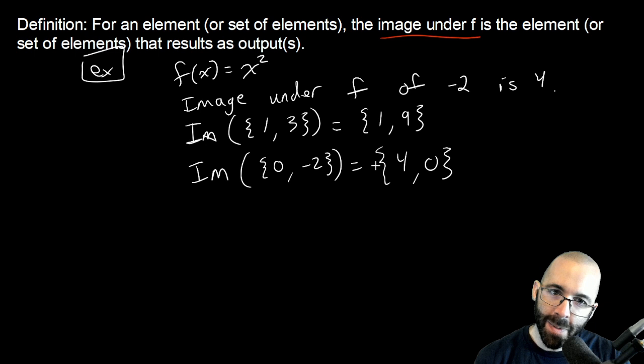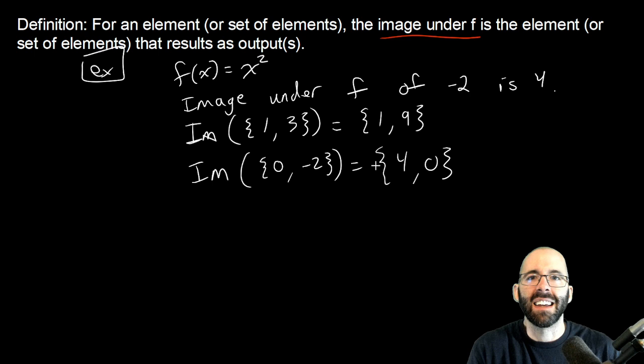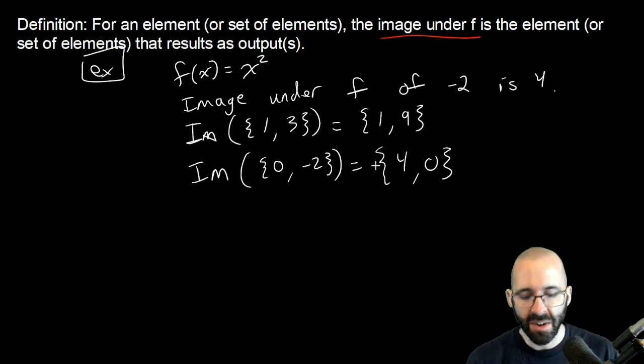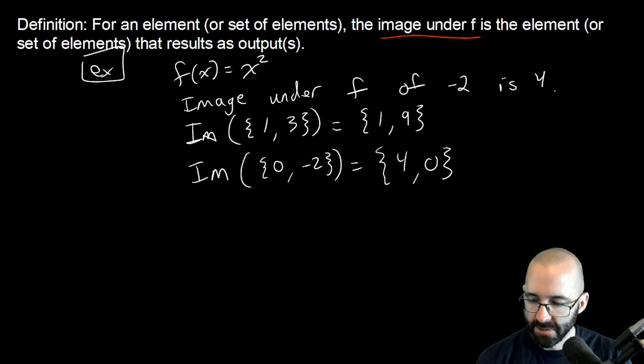But what do we remember? We remember that sets have no order. The order doesn't matter for sets. So yes, this is true - the image of this is that set, yep that's true. That's what an image under f of a set is.